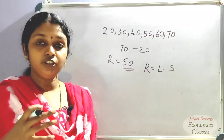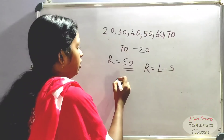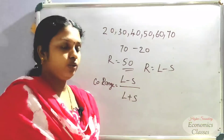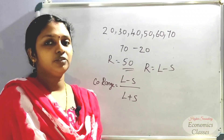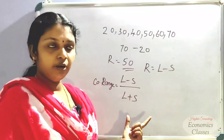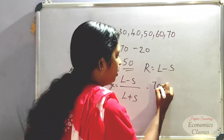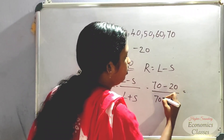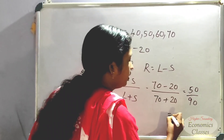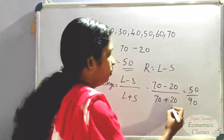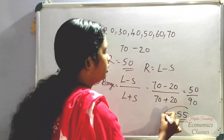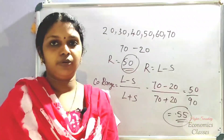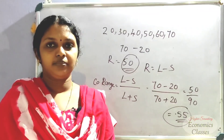The second question is the coefficient of range. What is the coefficient of range? Coefficient of range = (L minus S) divided by (L plus S). We have to use the largest value 70 and smallest value 20. So, 70 minus 20 divided by 70 plus 20 equals 50 divided by 90, which gives 0.55. That is the answer. The range question is clear. Let's take a look at the next question.